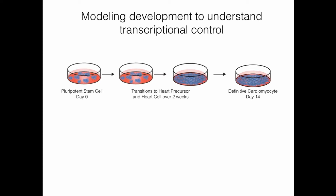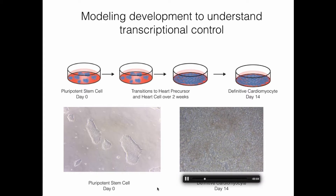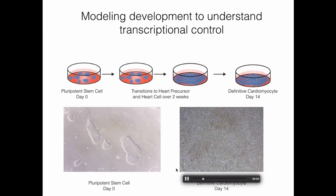In our lab, we use embryonic stem cell differentiation or induced pluripotent stem cell differentiation over a 14-day time course to look at how cells transition from an undifferentiated pluripotent state to a definitive cardiomyocyte. They start out as a single small colony of pluripotent stem cells, and over two weeks, as we initially modulate the WNT signaling pathway and later add specific growth factors, we drive them into a monolayer of beating cardiomyocytes. After 14 days, we have a fully beating sheet of cardiomyocytes, producing a highly pure population of greater than 90% cardiomyocytes.